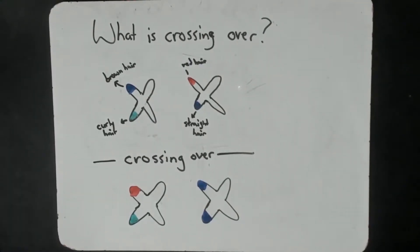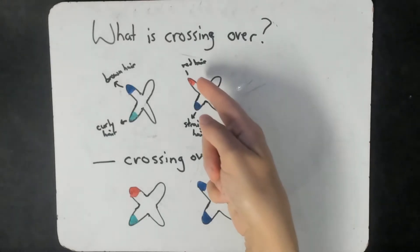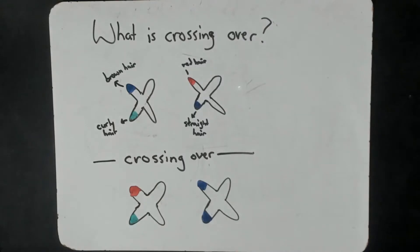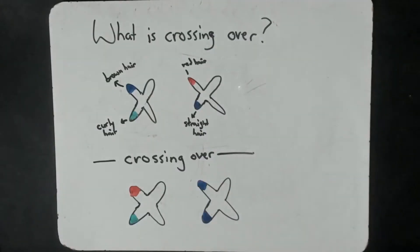The second question asks, what is crossing over? So crossing over has to do with these homologous pairs. So here we have two pairs. One codes for red hair that's straight, and one codes for brown hair that's curly. They both have to do with hair. There's a hair color gene and a hair type gene.